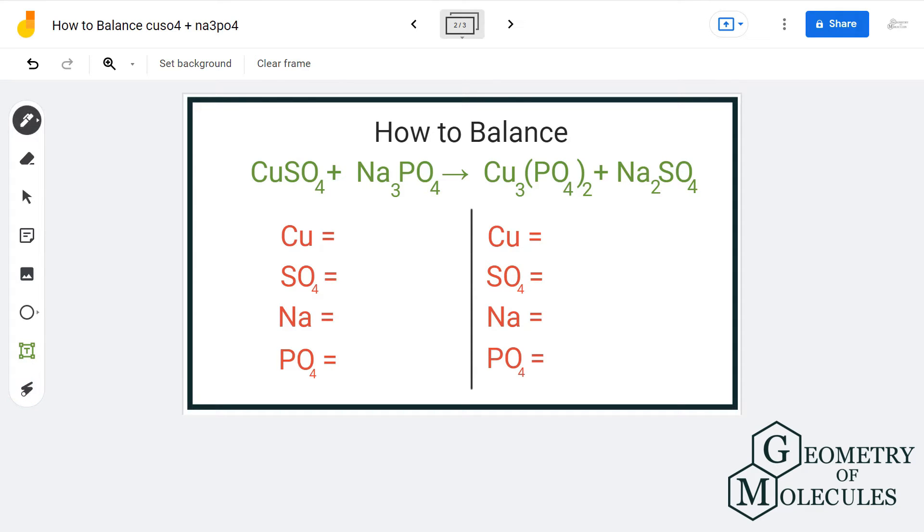We have one copper atom on the reactant side. Next is SO4, that is the sulfate ion, that stays together on both sides of the equation, so we will count it as one. This is a trick that can be used in double displacement reactions where we have polyatomic ions. Next we have 3 sodium and 1 phosphate ion.